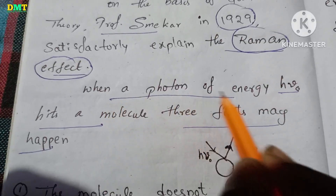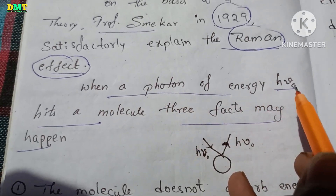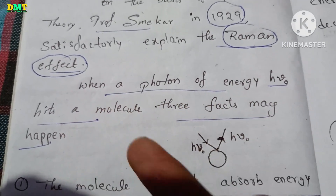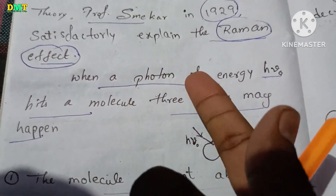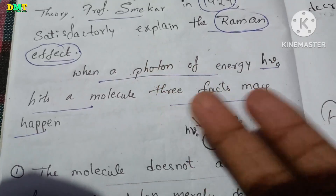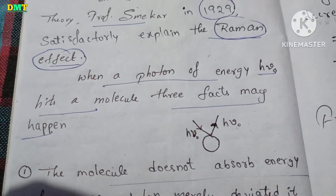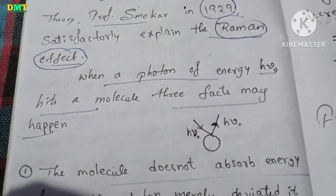When a photon of energy hits a molecule, three things may happen. These are the three cases.